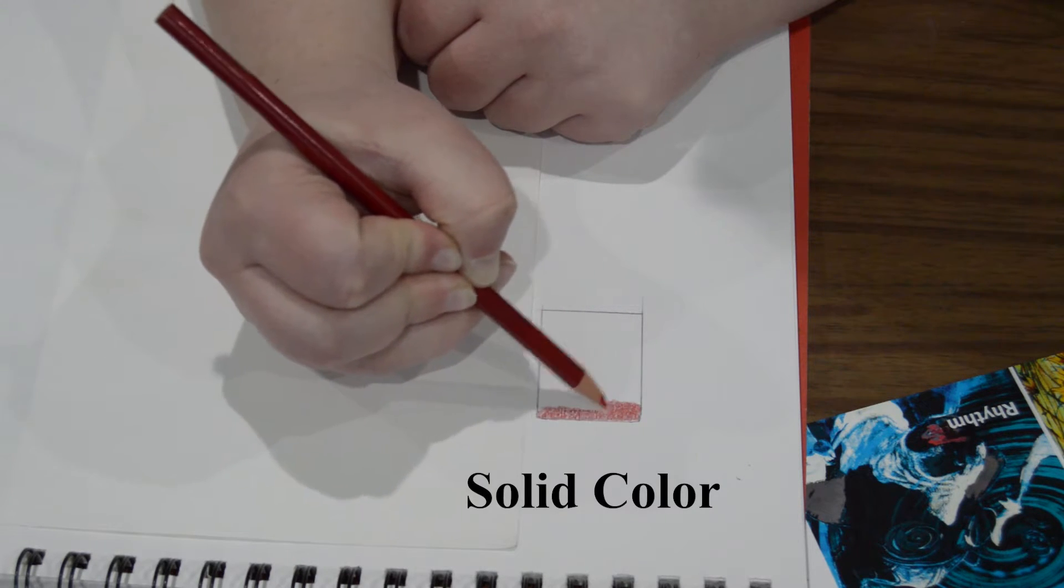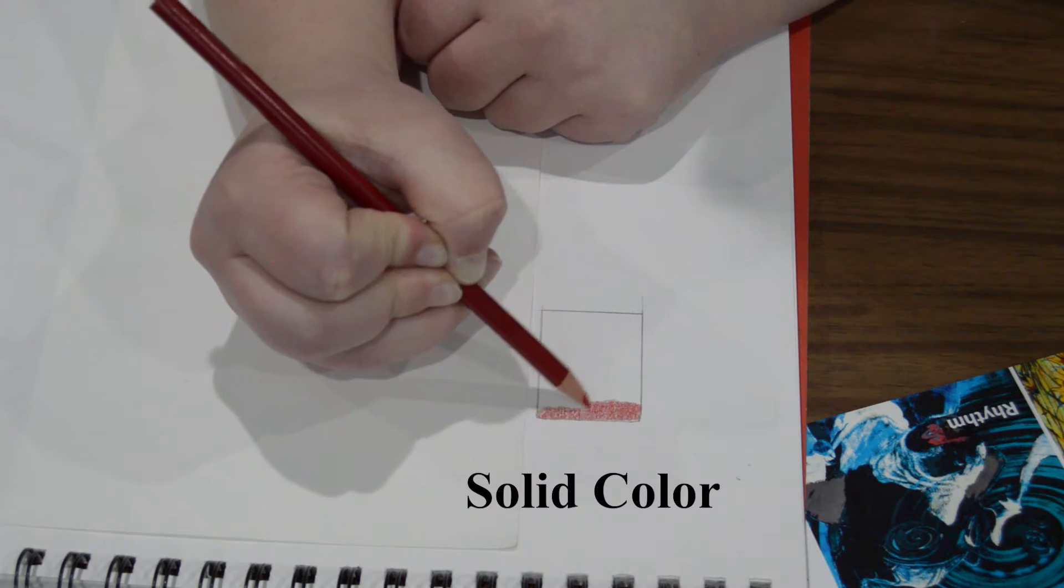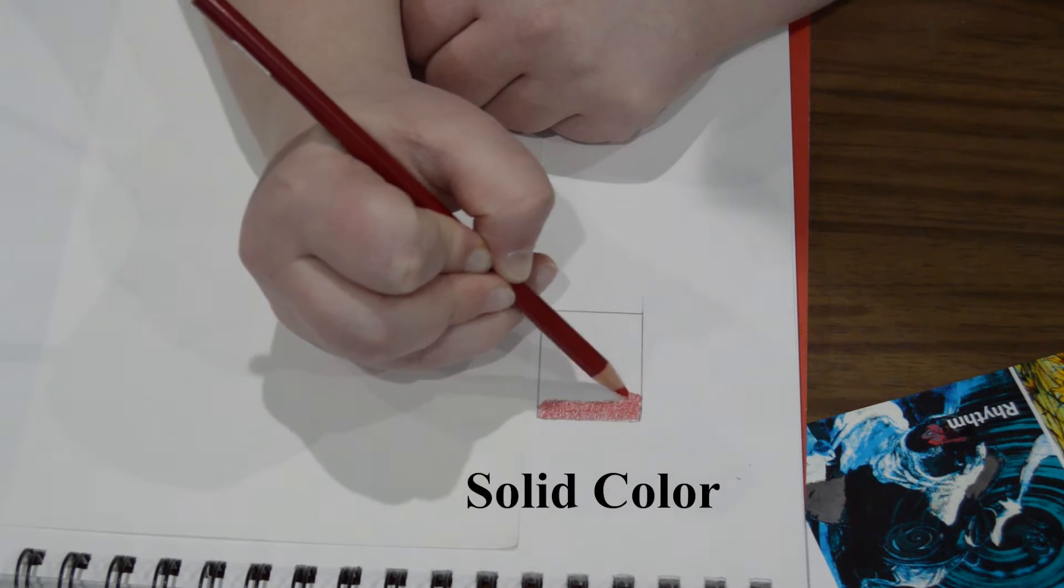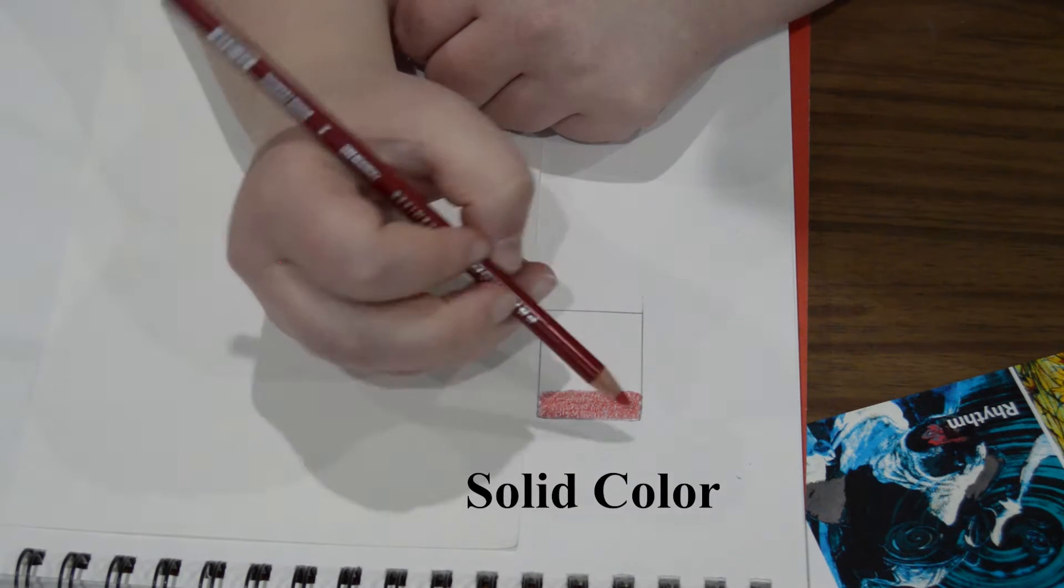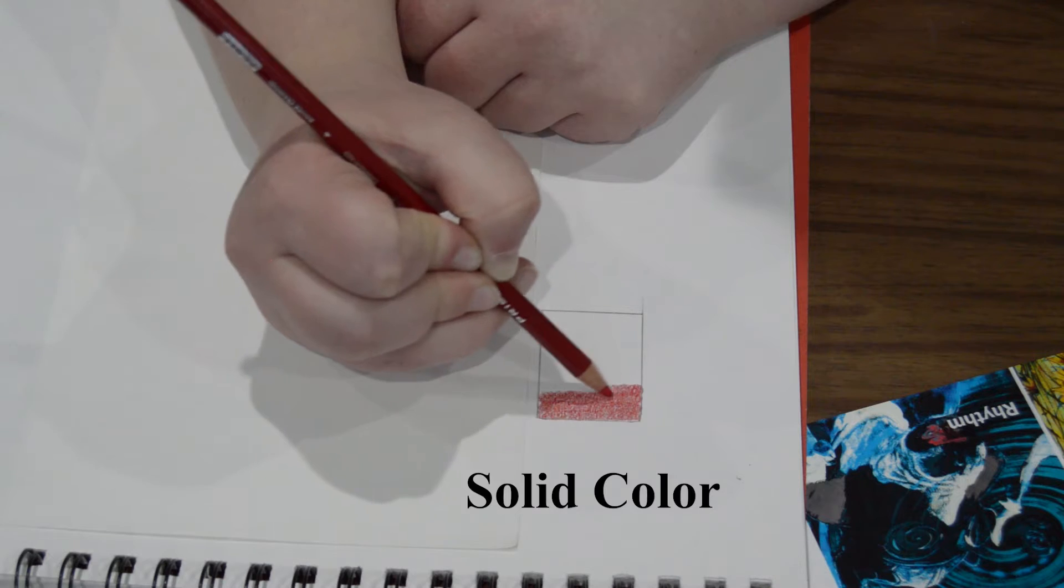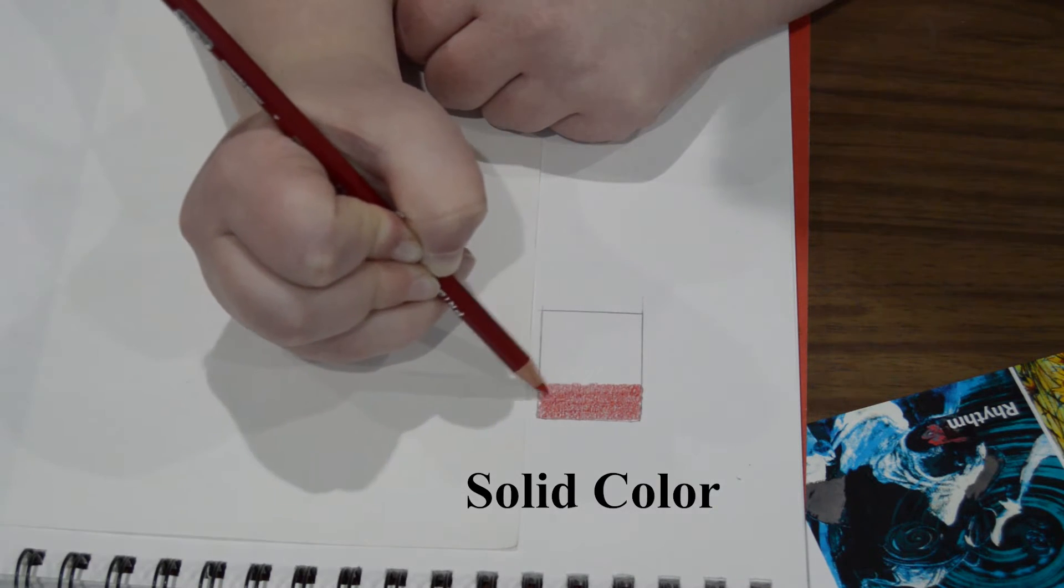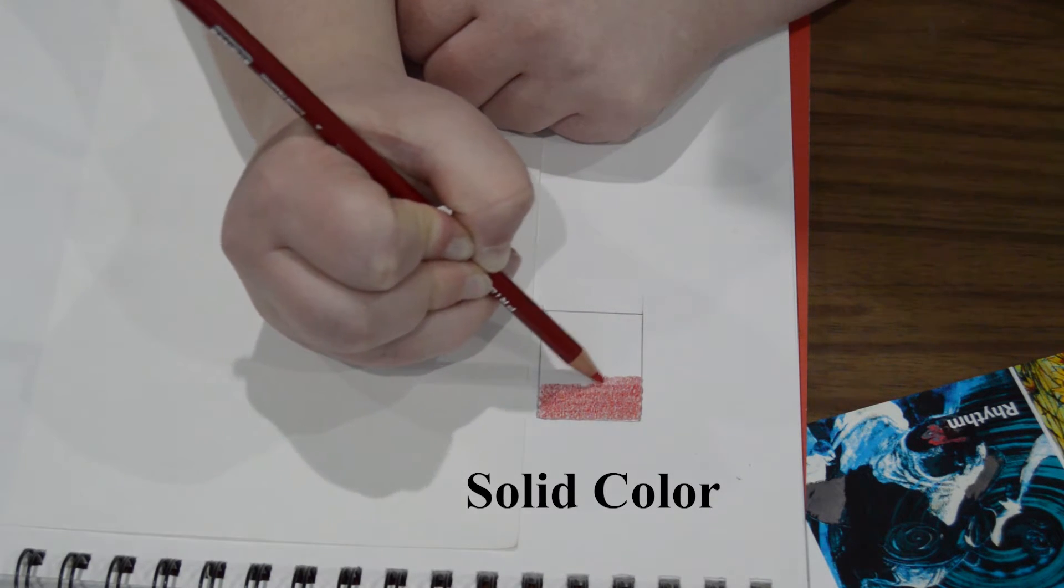I'm going to work from corner to corner all the way down. As I'm working my way down I'm making sure that I'm keeping my circles tiny. I'm also making sure that I'm making light pencil strokes.